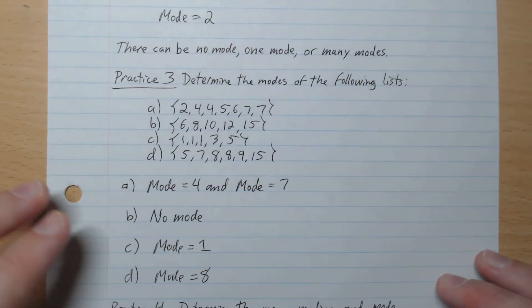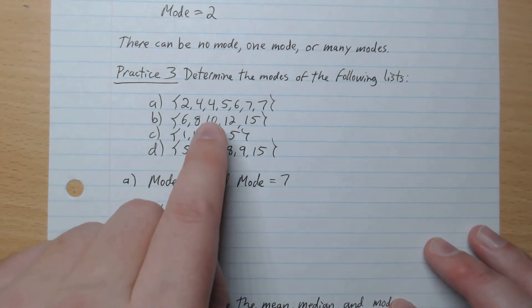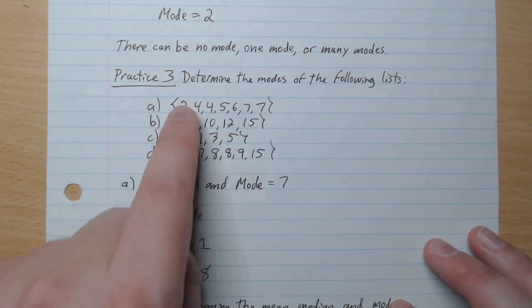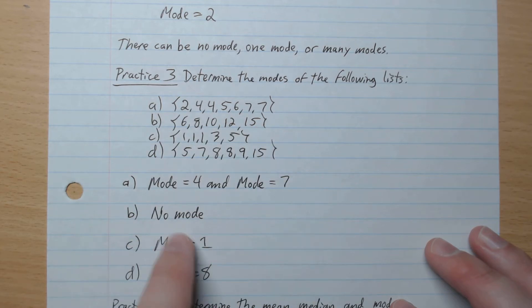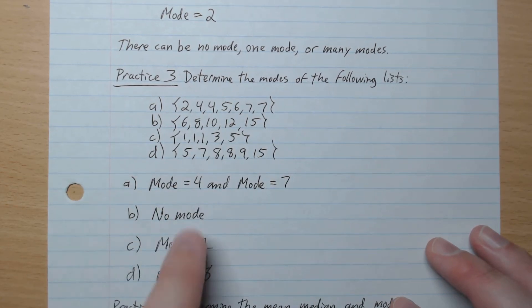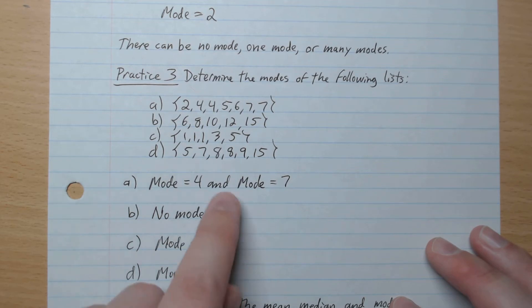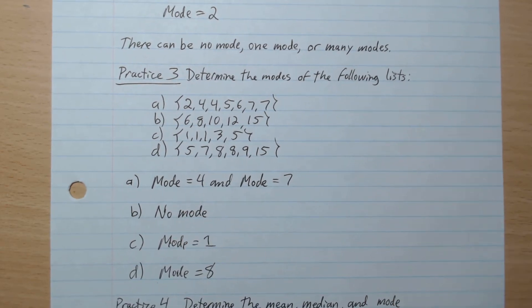Okay, we're back. So A, the mode is 4 and 7, because they both appear twice. B, they all appear once, so there's no mode. C, mode is 1. And D, the mode is 8, like that.